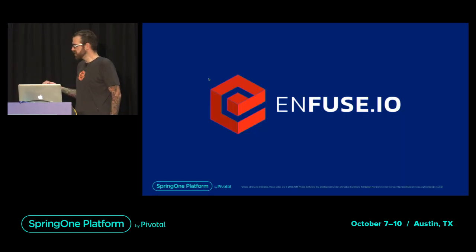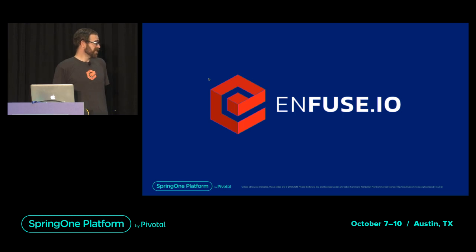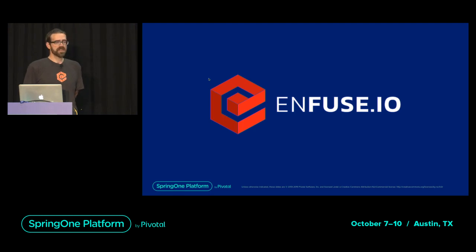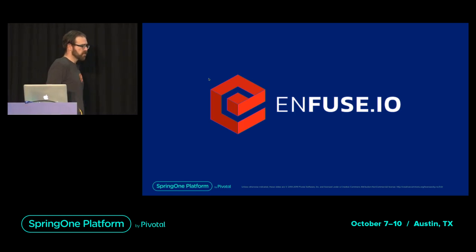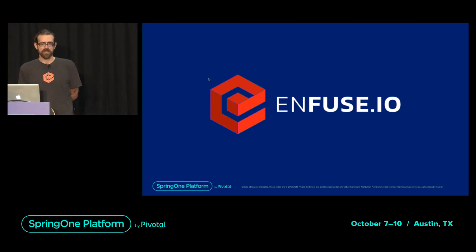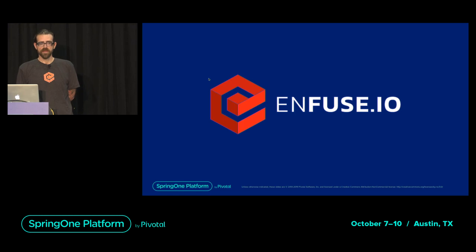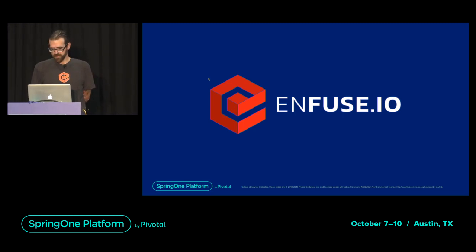We're from a company called Infuse — we're a professional services company, not a product company. We're brought into situations where clients may have run into trouble with event-driven architecture, or are just starting out and don't know what to do, don't know how to plan, don't know where to start. Infuse is very back-end oriented, working with massive amounts of data — things like Spark, Hadoop — and if Spring starters don't exist for certain utilities, we create them internally and implement them inside client pipelines.